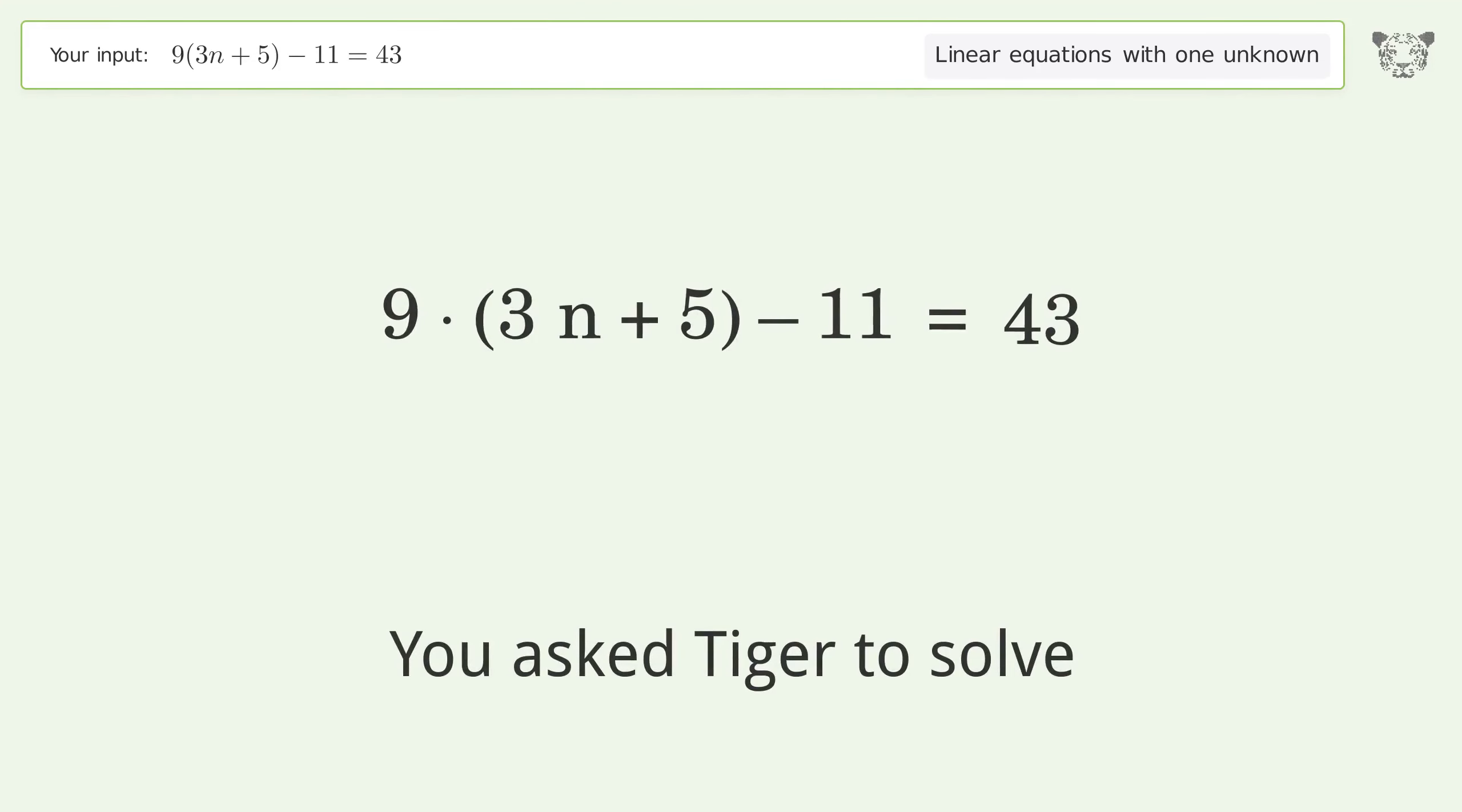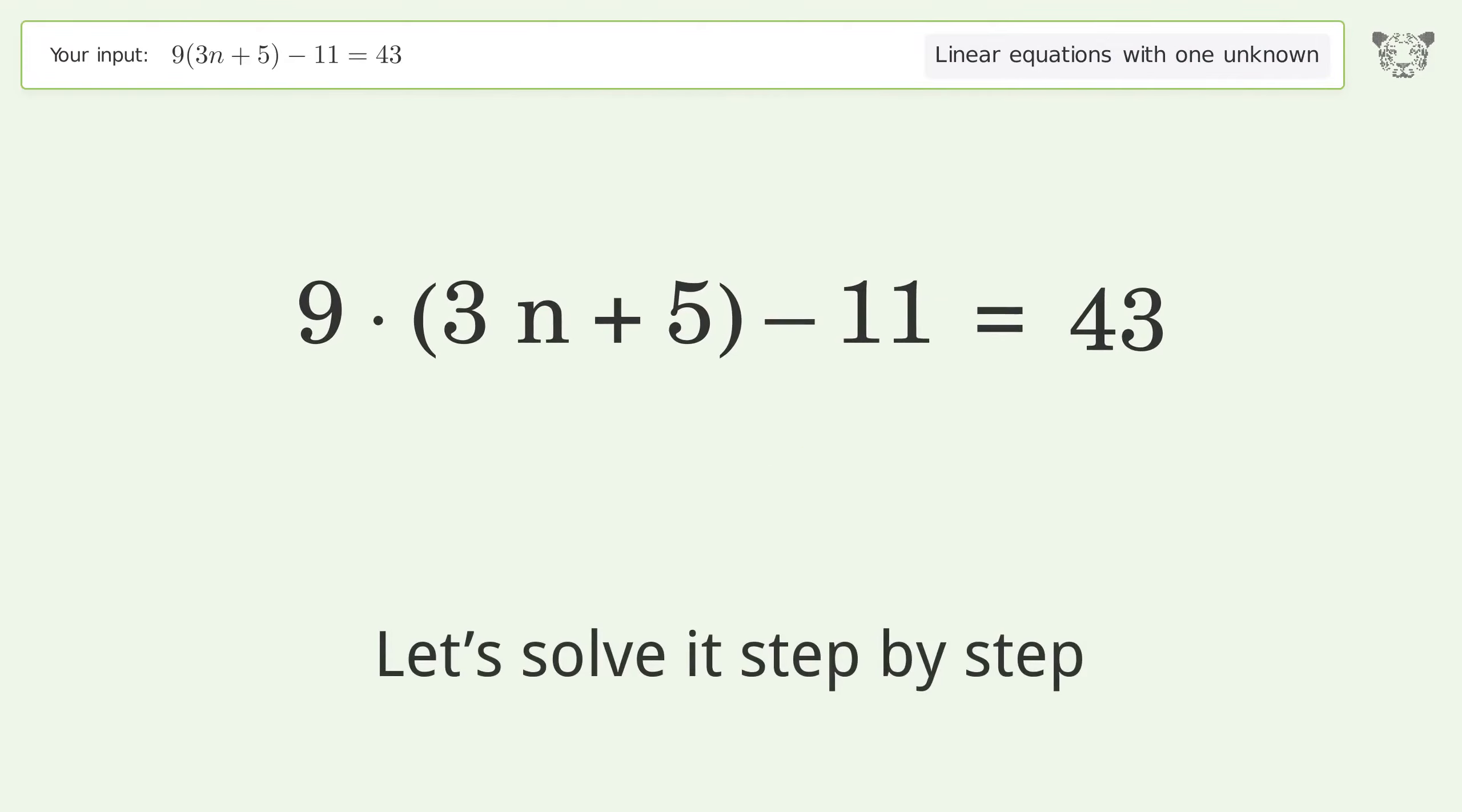You asked Tiger to solve this. This deals with linear equations with one unknown. The final result is n equals 1 over 3. Let's solve it step by step. Simplify the expression.